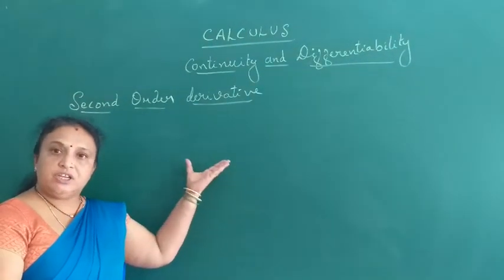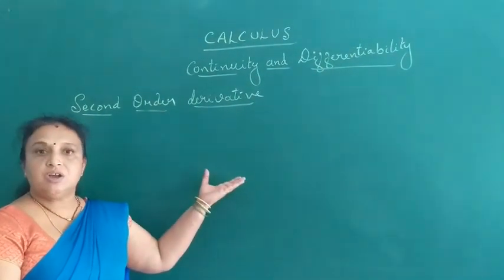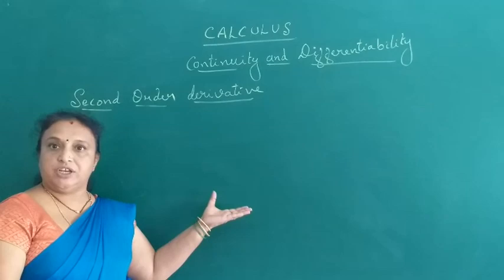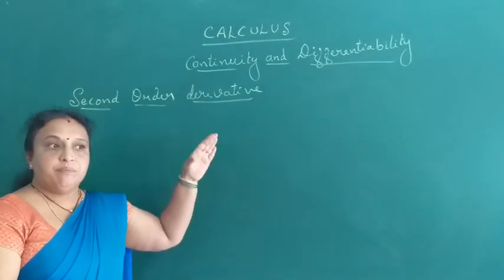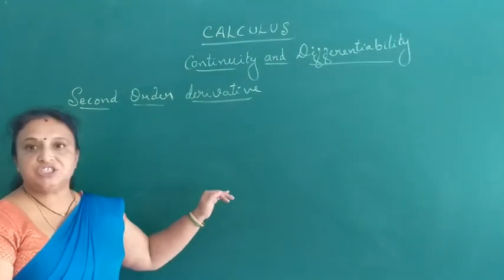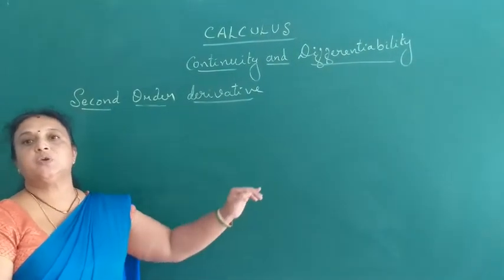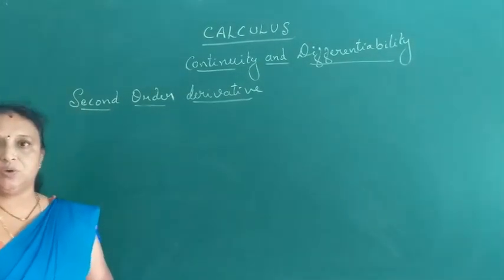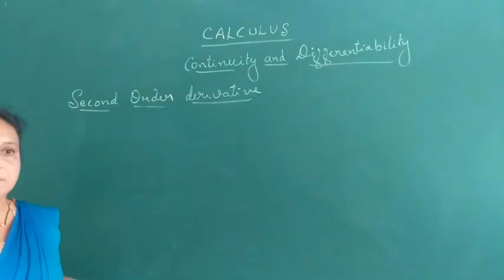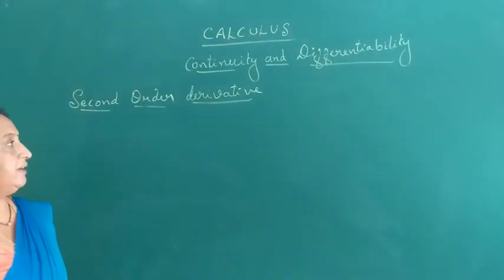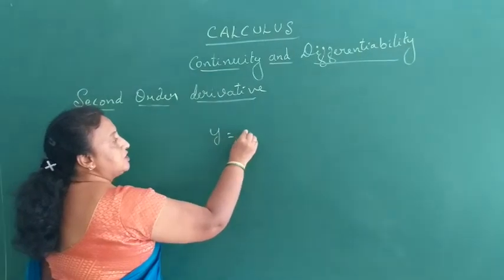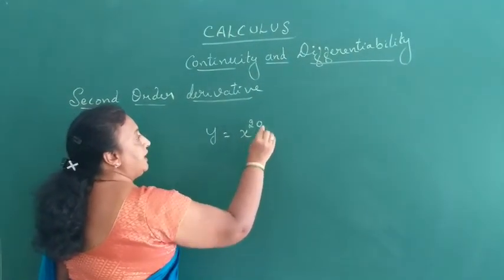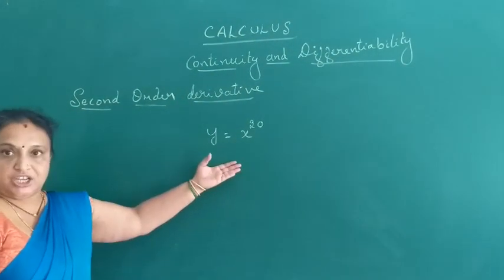The second order derivative is nothing but: first we find the first order derivative, then that function is again differentiated with respect to x — that is known as the second order derivative. For example, consider y equals x to the power of 20. That is the function.